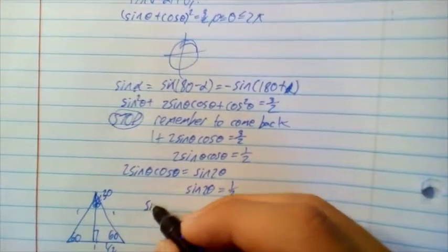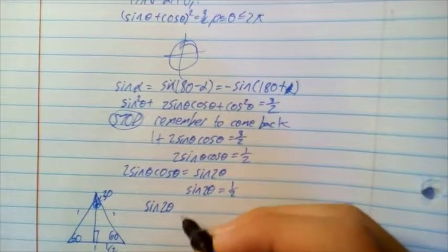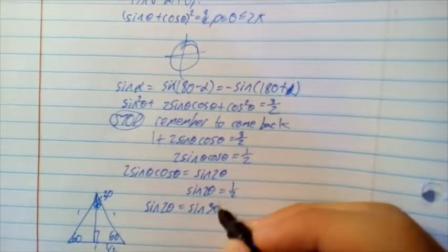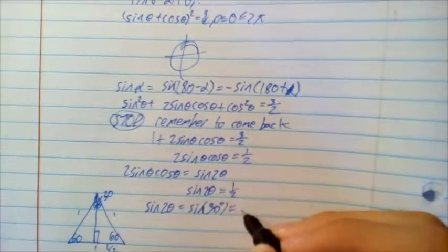Sin of 30 is equal to 1/2 over 1. So, we have sin of 2 theta is equal to sin of 30 degrees, which is equal to 1/2.